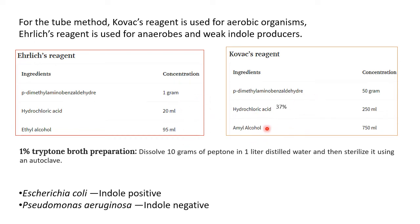The difference between the two reagents lies in the concentration and the alcohol used — ethyl alcohol versus amyl alcohol — and the hydrochloric acid used is 37%. Regarding the broth used for culture inoculation, that is 1% tryptone broth. To prepare it, dissolve 10 grams of peptone in 1 liter of distilled water, sterilize it using an autoclave, and then add 1 gram of tryptone to it.